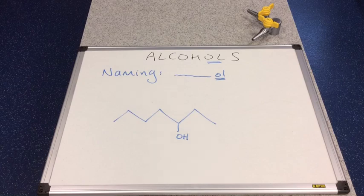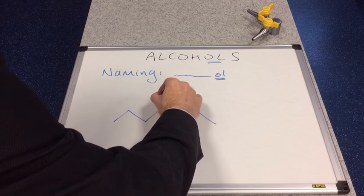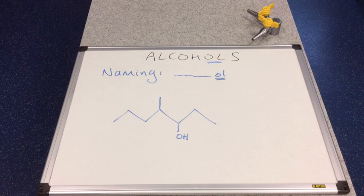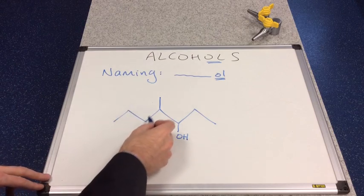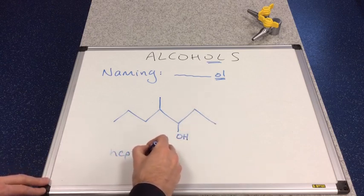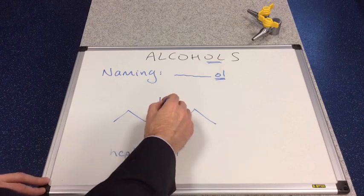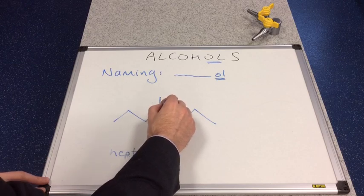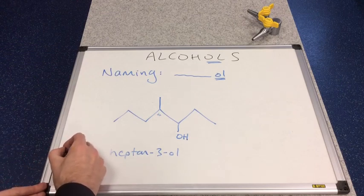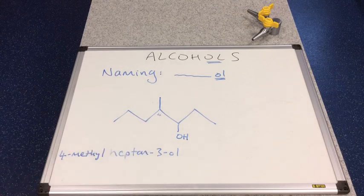I'm going to adapt the one we've just looked at by putting a methyl group on carbon 4. The chain is still 7 carbons, so it's still 'hept' and '3-ol' because the OH is still on carbon number 3. But now on carbon number 4 we've got a methyl group, so this would be called 4-methyl-heptan-3-ol.